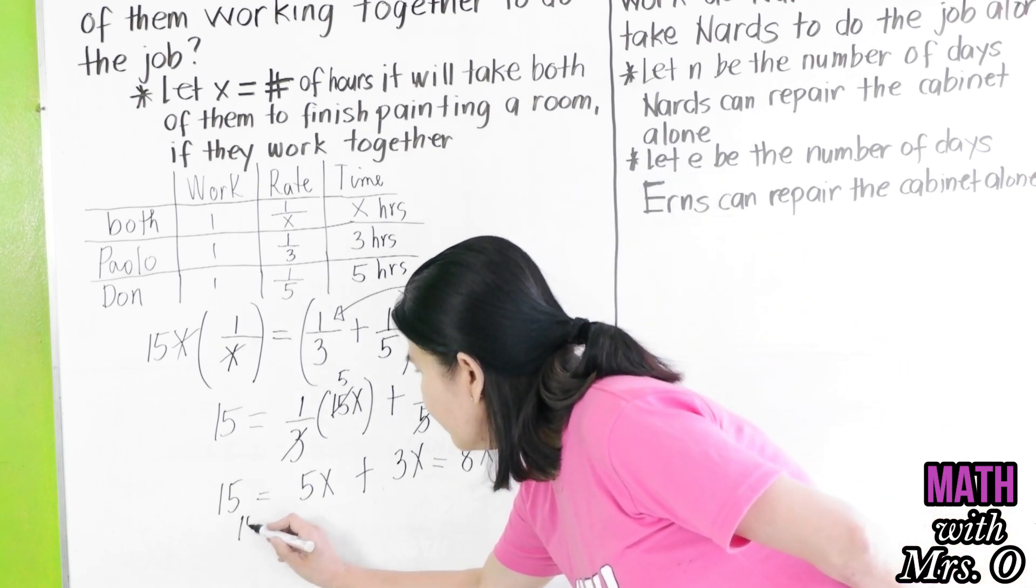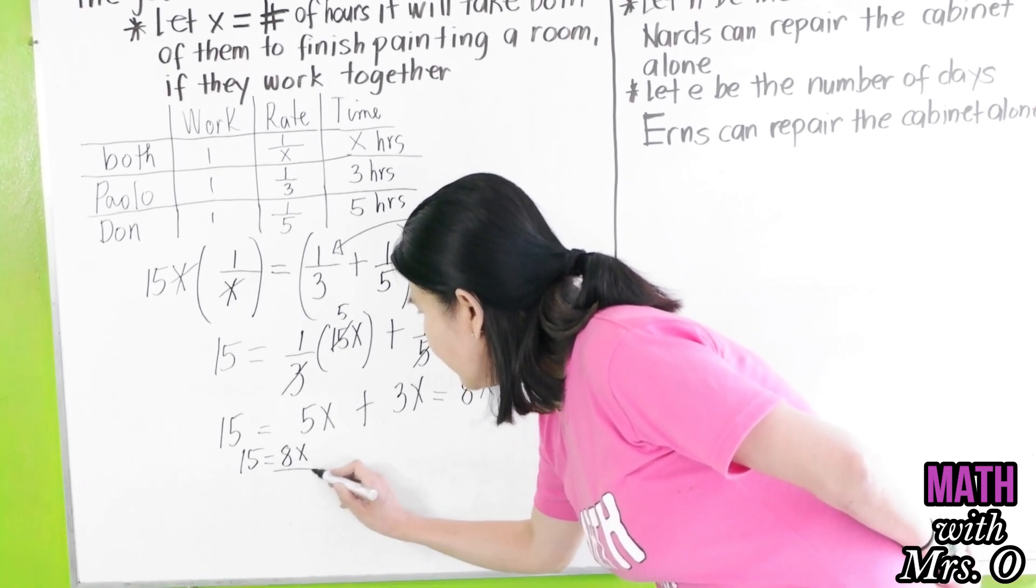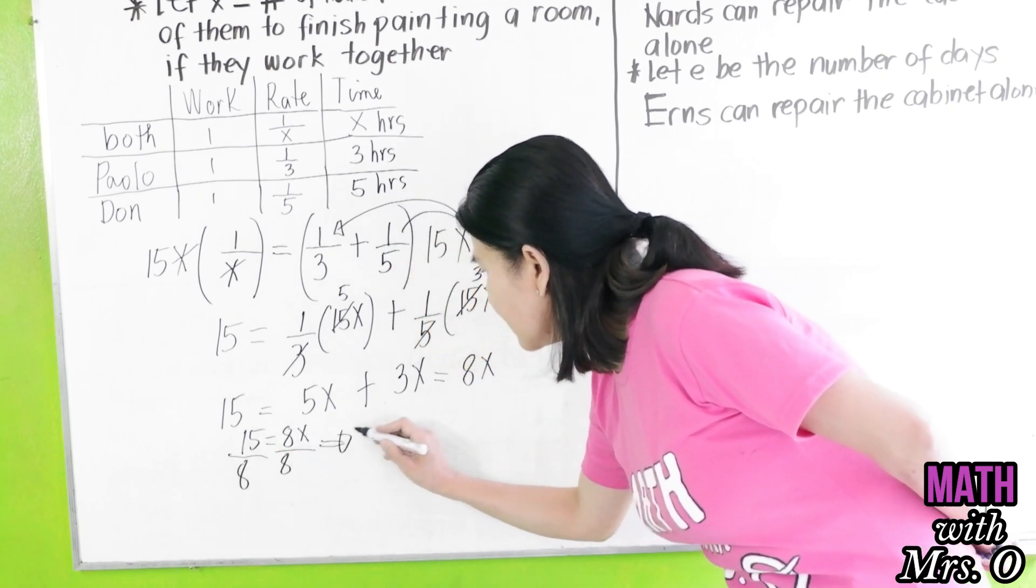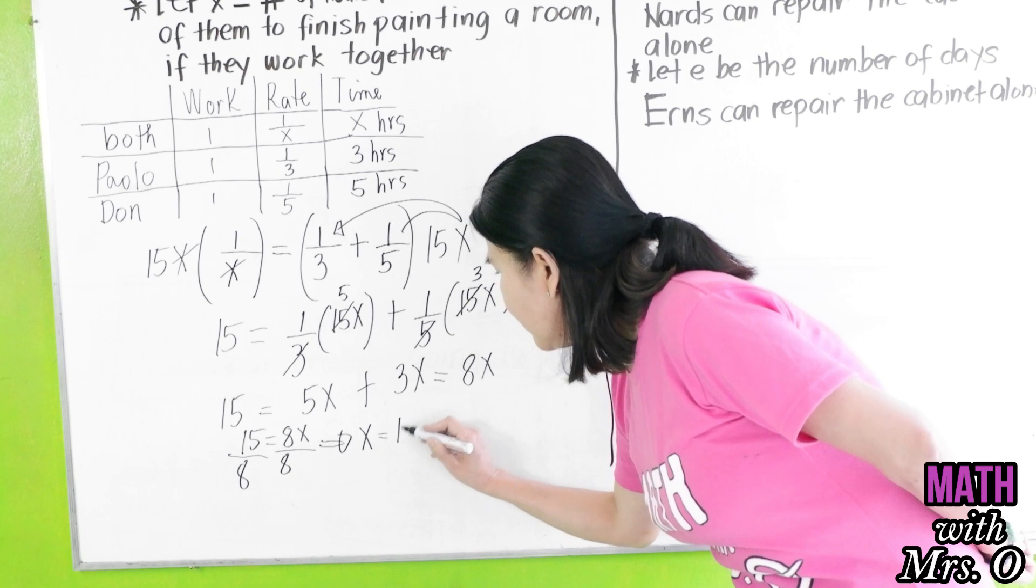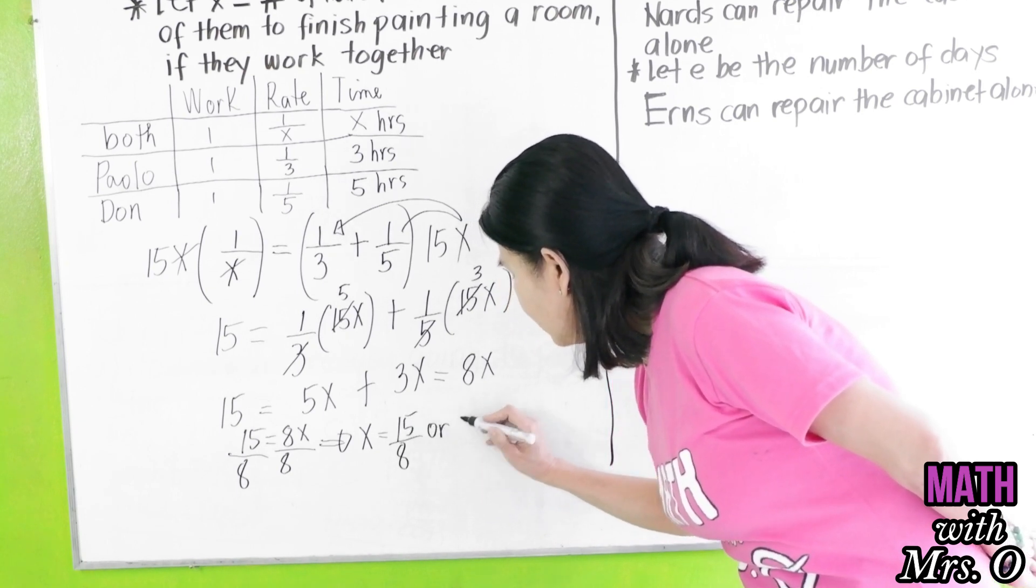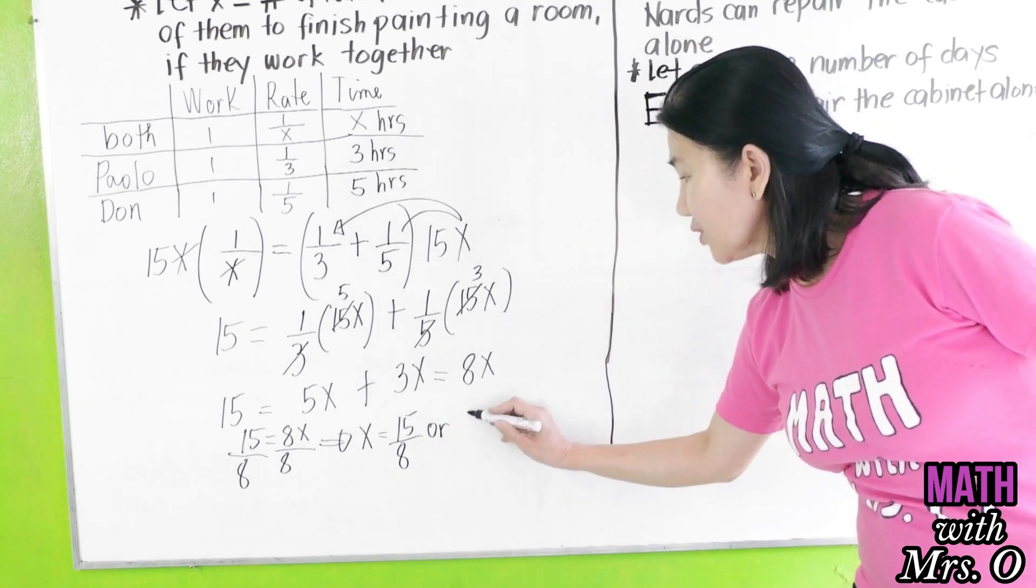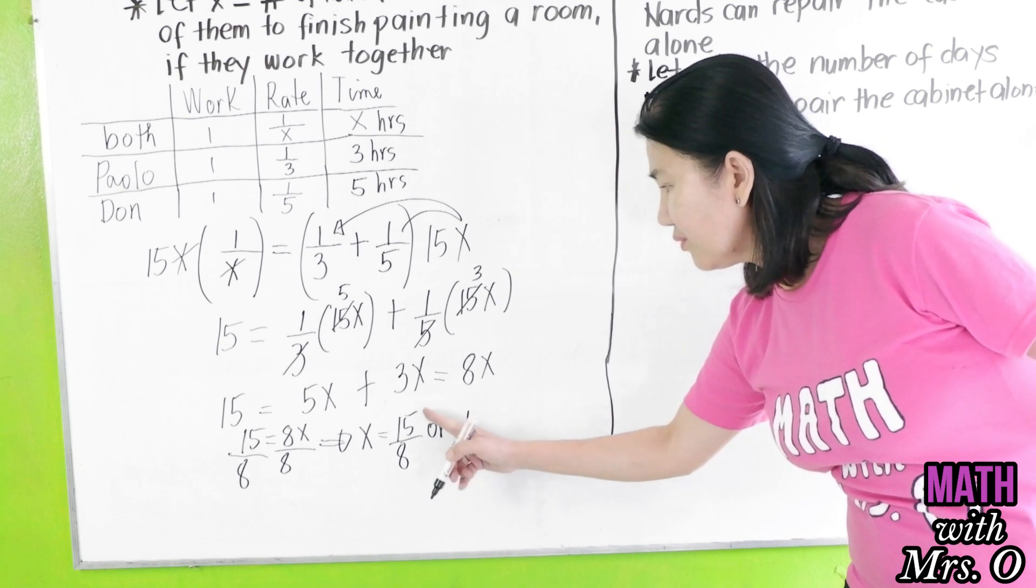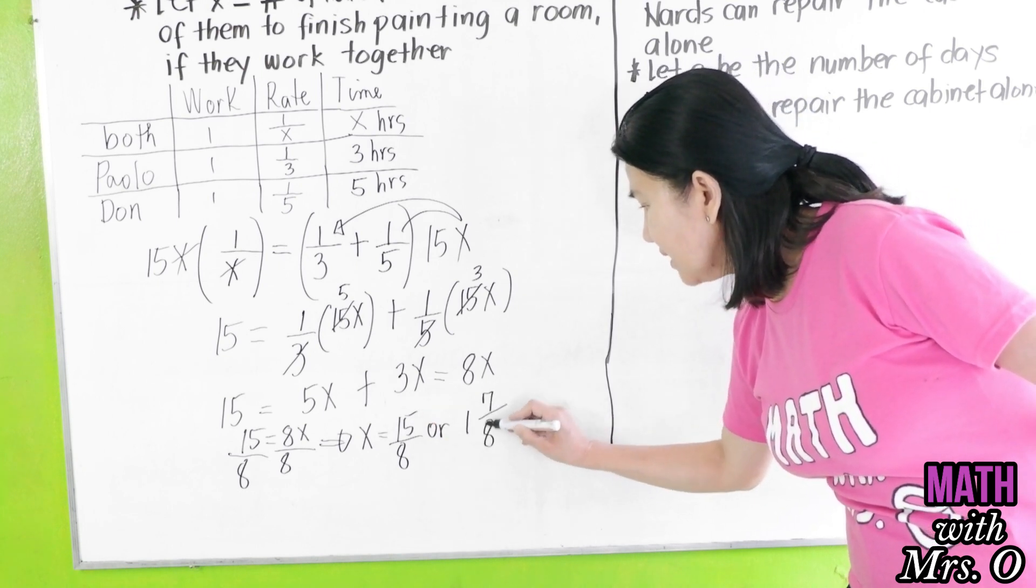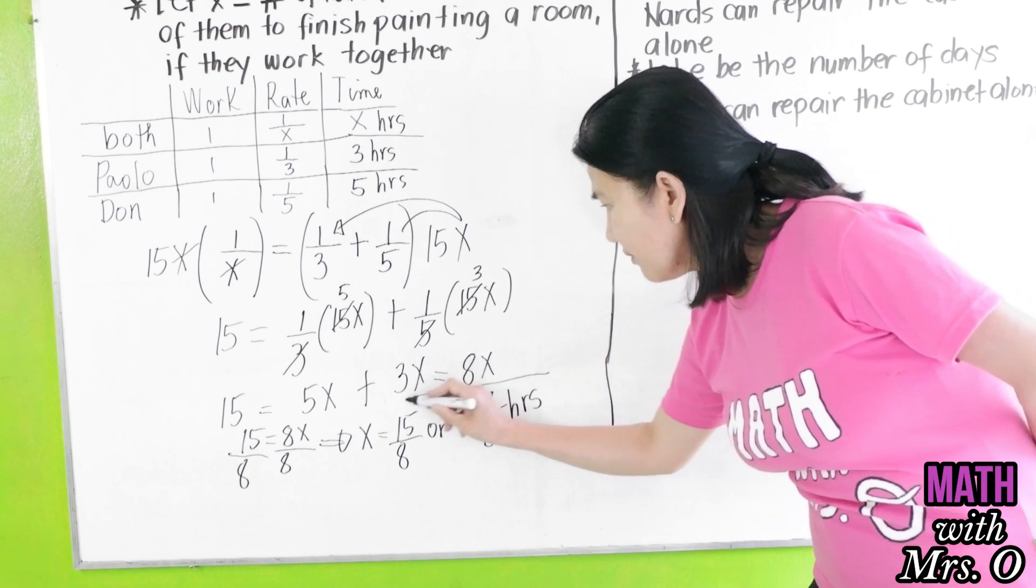So 15 is equal to 8X. We divide both sides by 8. So this gives us an X, which is 15 over 8 hours. Or, 15/8 can be written as a mixed number. So you have 1 and 7 over 8 hours. This is the final answer.